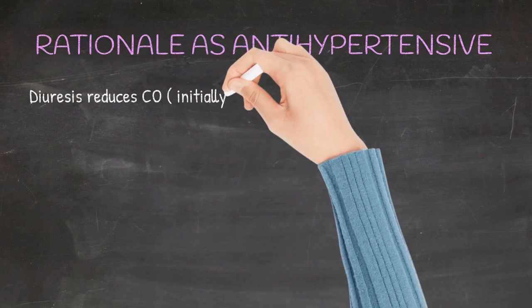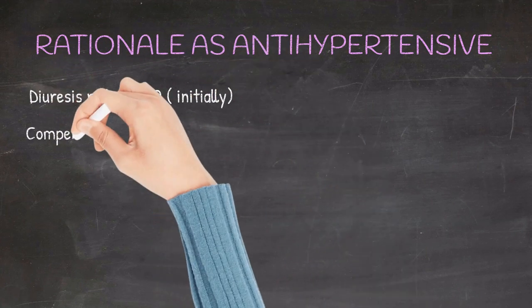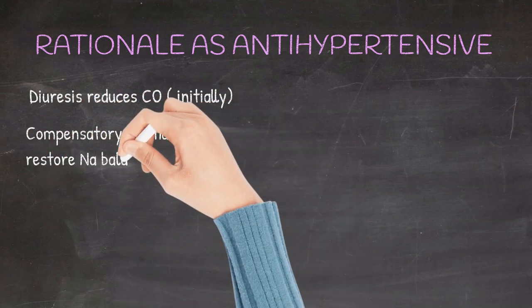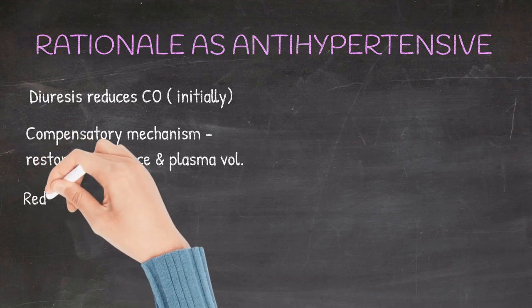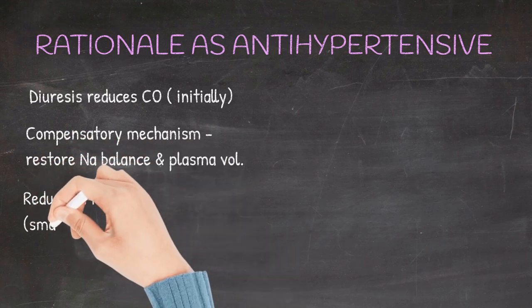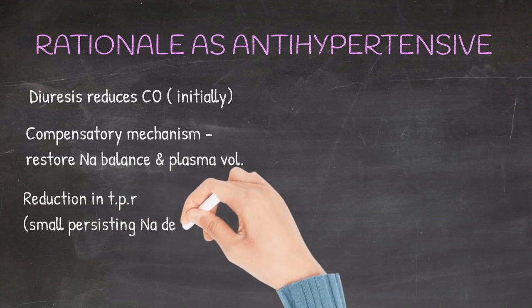Later on, the compensatory mechanisms come into play and thus the sodium and plasma volume is restored. But on long-term usage, the fall in BP is due to reduction in total peripheral resistance because of a small persisting deficit in sodium volume, thus improving the vessel wall compliance and decreased responsiveness to vasoconstrictors.